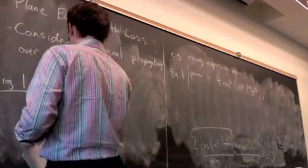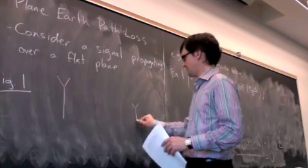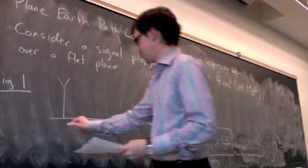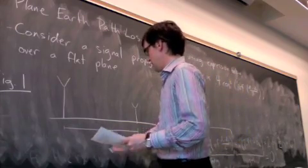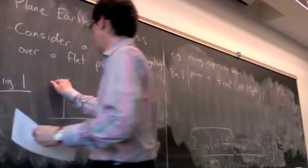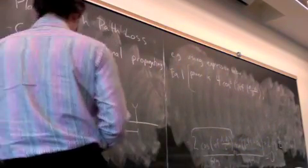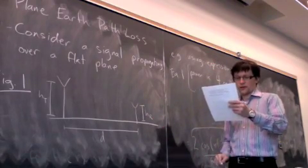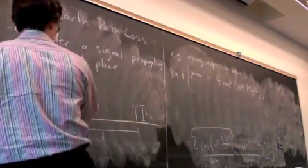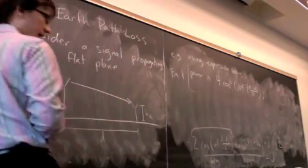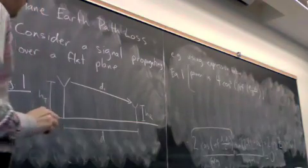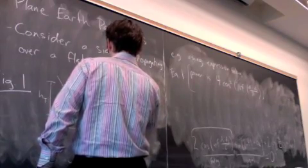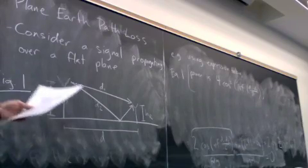So we have a transmit antenna over here, we have a receive antenna over here, and flat earth between them. Distance from transmitter to receiver is d, the height of the transmitter is ht, the height of the receive antenna is hr, and we have two paths of propagation. One is the direct path with distance d1, and the other is the path that bounces off the earth, with total distance d2. Obviously d2 is greater than d1.